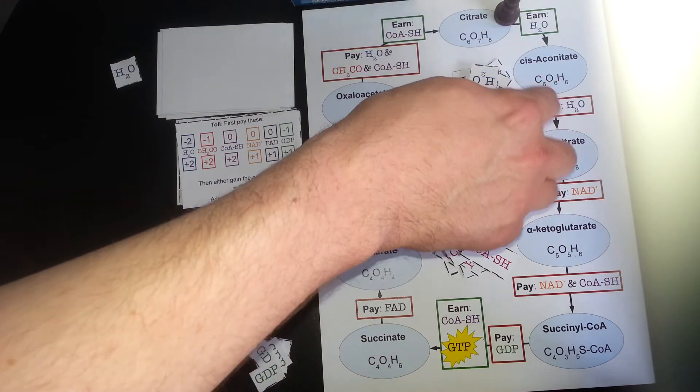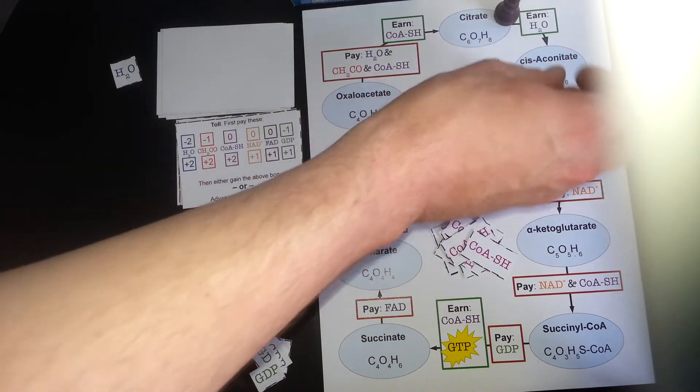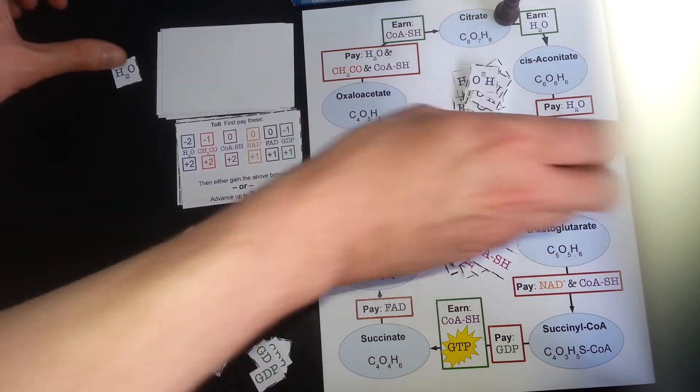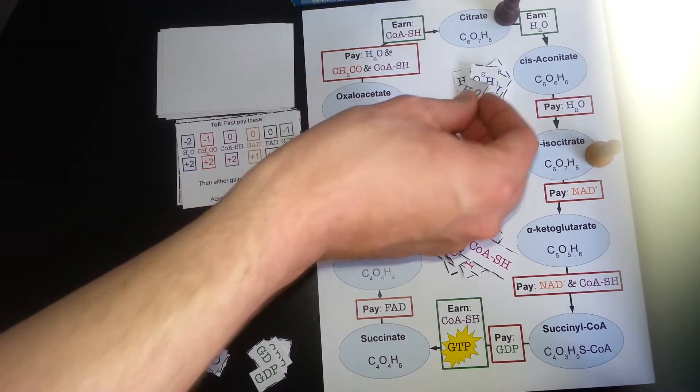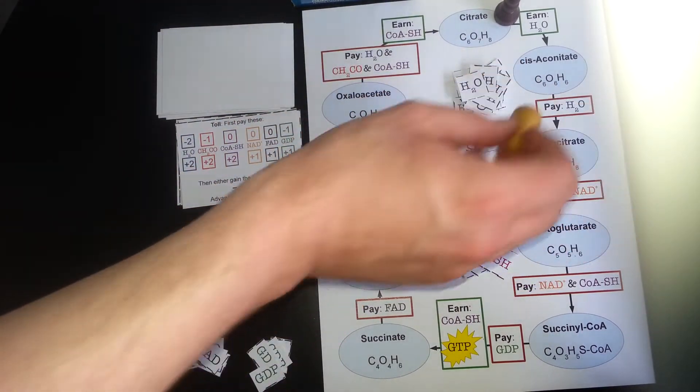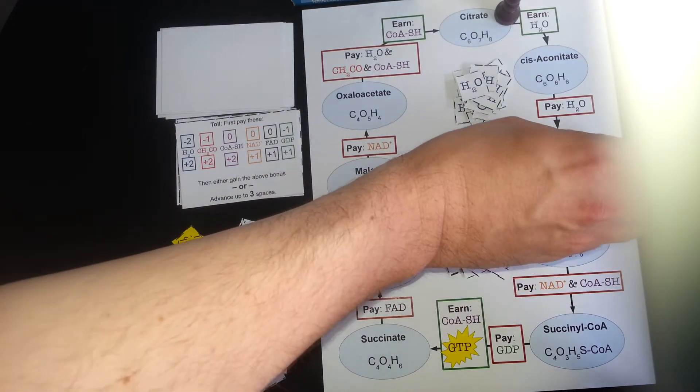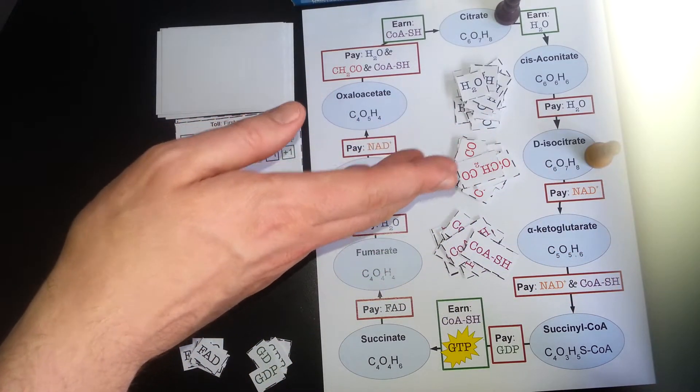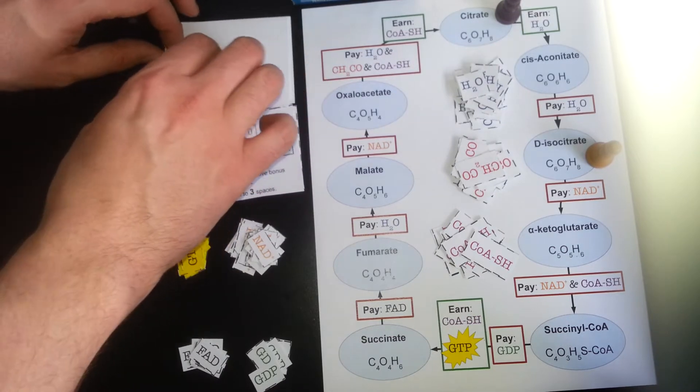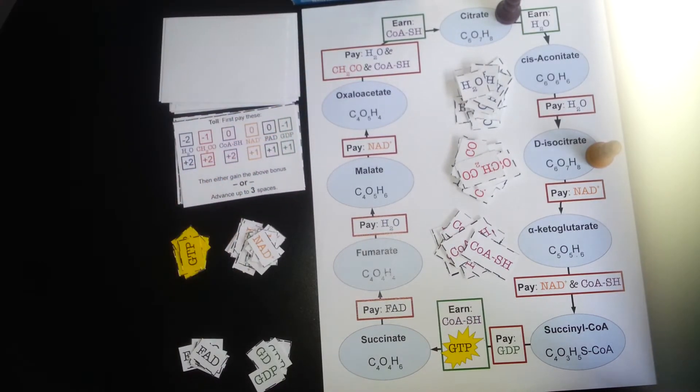And now, this box is in red. I can't advance if I can't pay it. Luckily it's a water, and I just got one, so I can pay that. And now I've moved two spaces. Unfortunately, I don't have an NAD+, so I can't move any further, so I only go two of those three spaces. I don't know, maybe that wasn't a good decision. Either way, my turn is over, Ernie, it is now your turn.